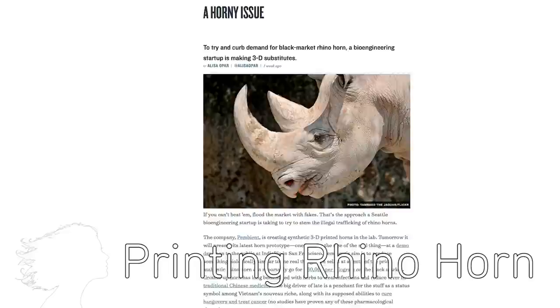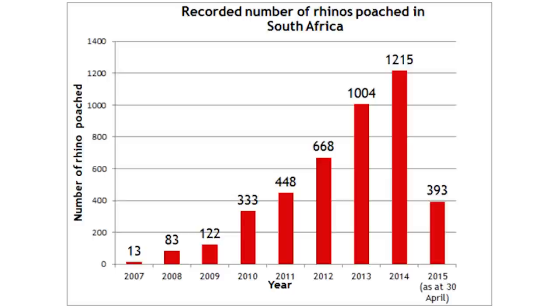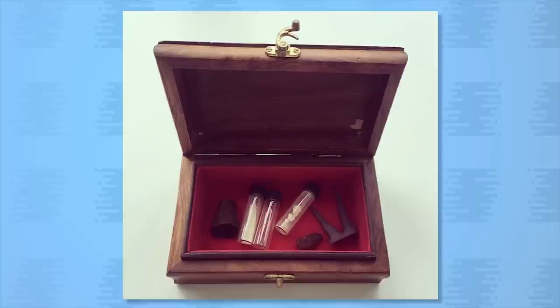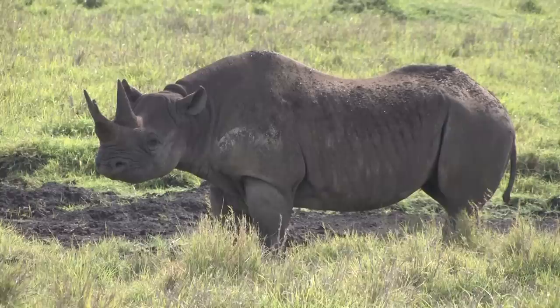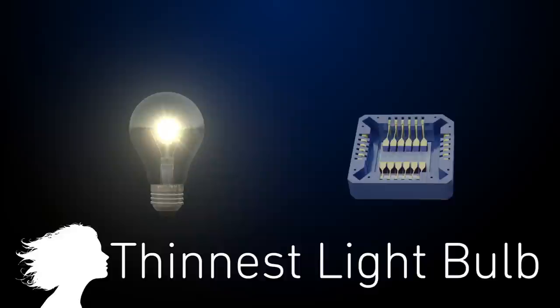Pembion is hoping to prevent the extinction of rhinos by 3D bioprinting their horns. The Western Black Rhino went extinct in 2011 due to poaching for its valuable keratin. The horns that Pembion is printing are indistinguishable from the real thing, even down to the molecular level. And they hope to significantly lower the value of rhino horns by introducing the product to the market later this year.